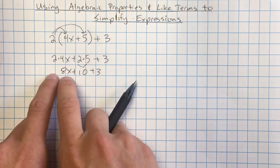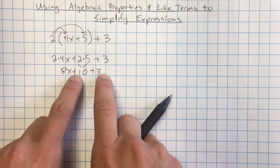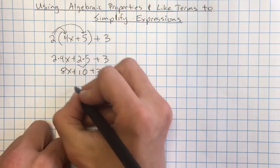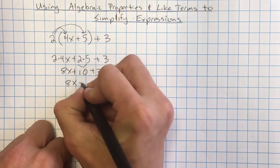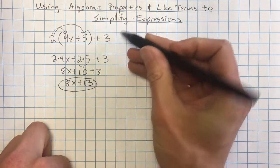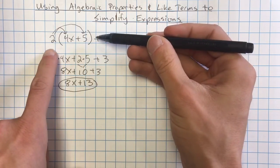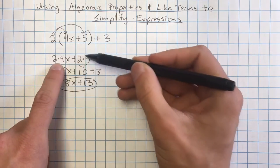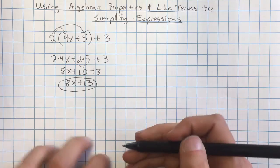I could add any x's together. There's no other x's, so I'm done with that. But I can add these. So that gives me 8x plus 13. And I have now simplified this expression by using that distributive property to rewrite it and then combining the like terms that were present.